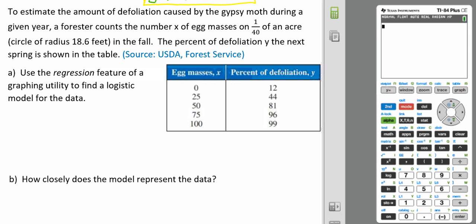we have to estimate the amount of defoliation caused by the gypsy moth during a given year. A forester counts the number X of egg masses on 1/40th of an acre, which is a circle of radius about 18.6 feet in the fall. The percent of defoliation Y the next spring is shown in the following table.